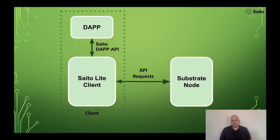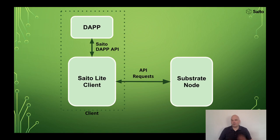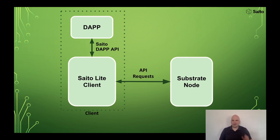Some people get confused about what a light client is — it doesn't do everything the full network does, it's optional. It doesn't mine blocks or route other transactions, only its own. The light client is not critical infrastructure for the network as a whole, but it is our proof of concept for having a more peer-to-peer-friendly network infrastructure within a blockchain.